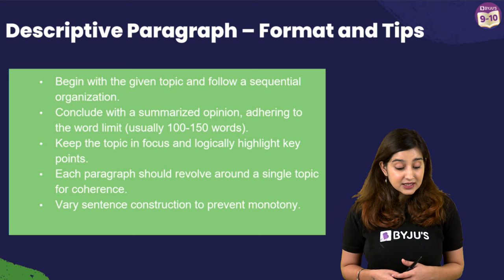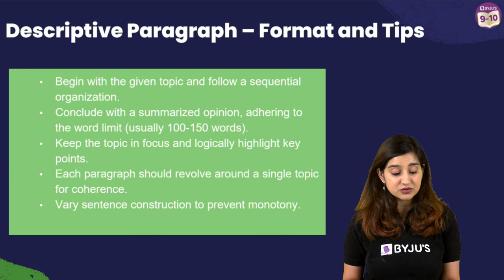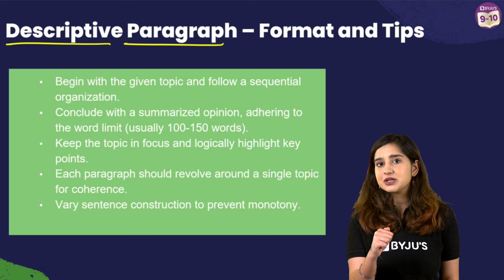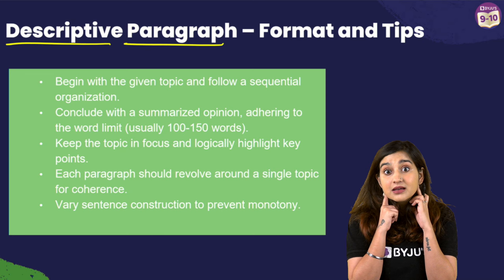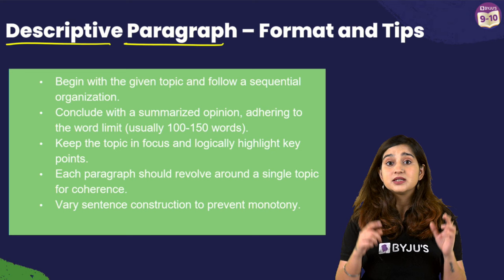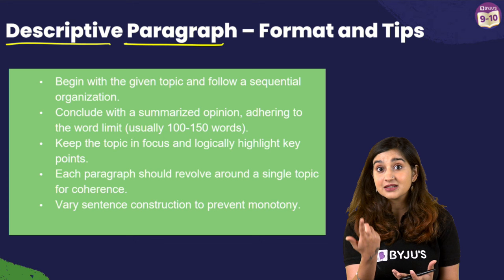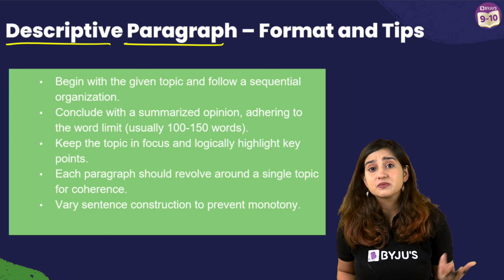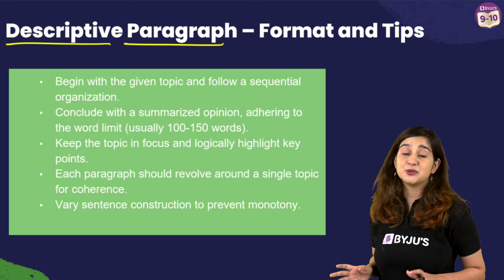Vary sentence construction to prevent monotony — make sure you're using different types of sentences. And that brings me to a very important point about descriptive paragraphs in general. When you describe something, think about how to engage all the senses: what it looks like (your sense of sight), what sounds you hear (your sense of hearing), what it smells like (your olfactory sense, especially useful for food and ambience), taste — which also comes into play with food — and obviously your sense of touch. You need to make use of all five senses to describe whatever you're being asked about. That will make your paragraph extremely vibrant.